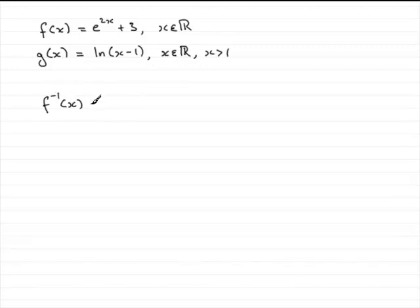Well first of all, if we're trying to find what this equals, what I would suggest you do is we let x equal f of x, so just say let x equal the f of x, and wherever you see an x in your function here, replace it with a y. So we get e to the 2y plus 3.